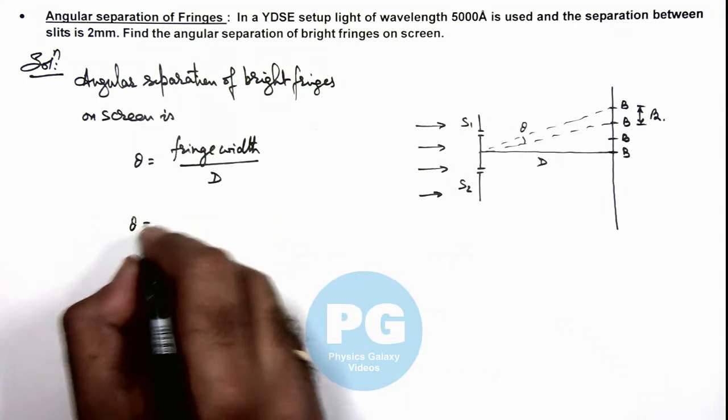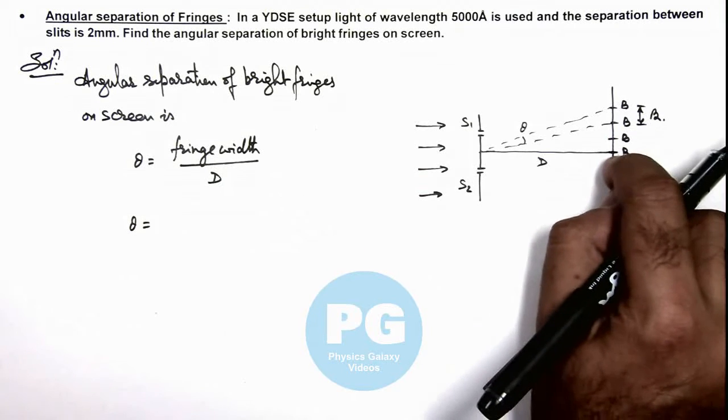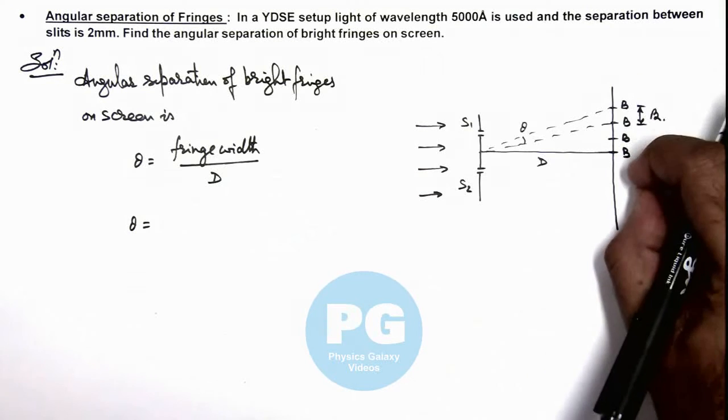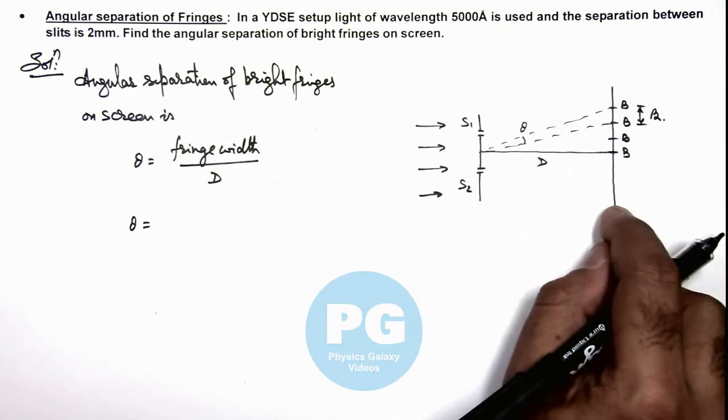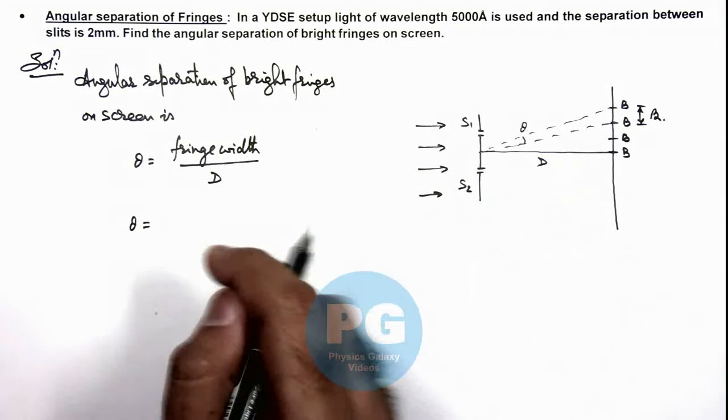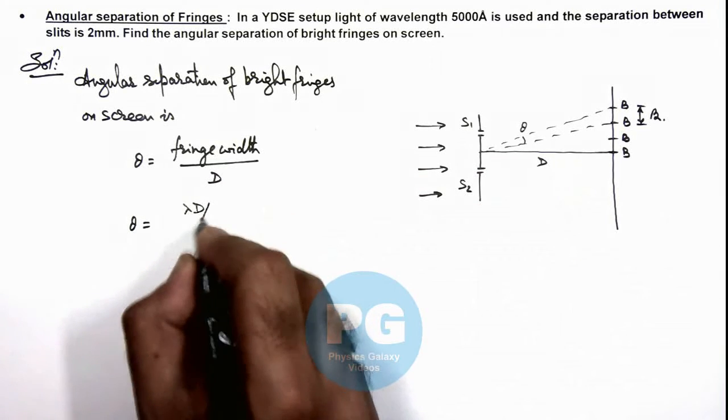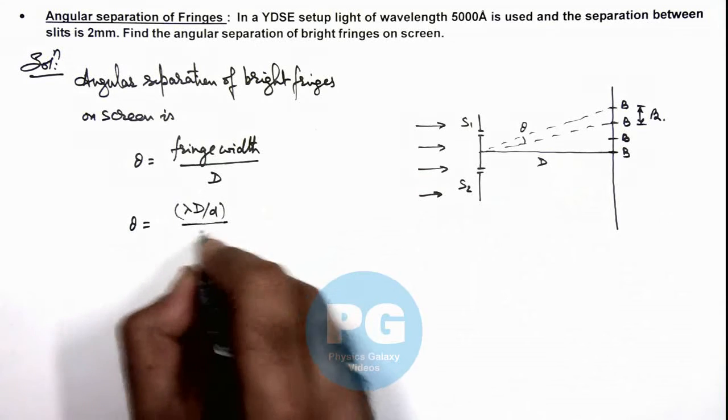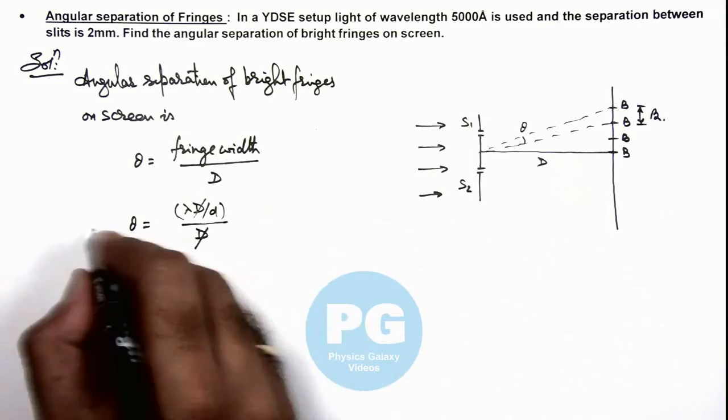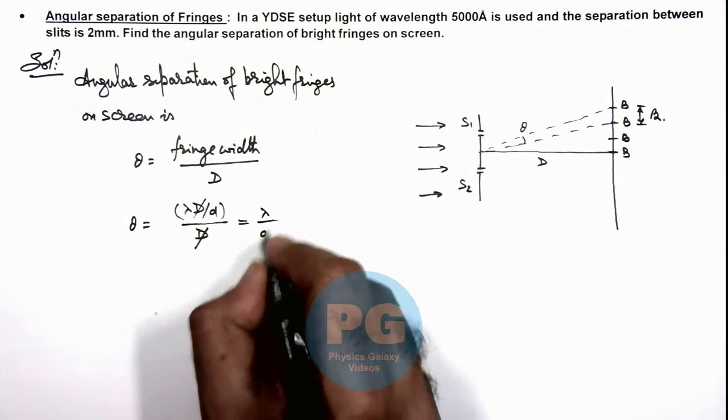So if we substitute the value of fringe width, and here you can ignore this small separation of bright fringes from the central maximum, because beta is so small all such bright fringes we can assume located at a distance d from the slit plane. So fringe width we can write as lambda capital D by small d divided by capital D. So here capital D gets cancelled out, and the value of this angular separation will be lambda by small d.